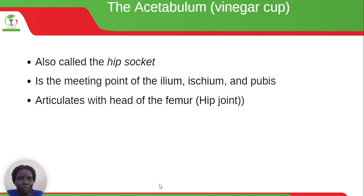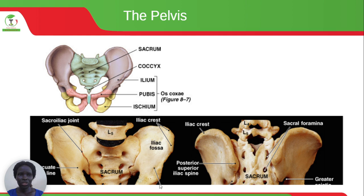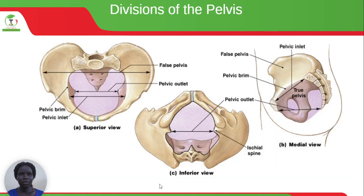The acetabulum, also called the hip socket or vinegar cup, is the meeting point of the ilium, ischium and the pubis. The pelvis articulates with the head of the femur at the hip joint. The pelvis is divided into two: the false pelvis, which is the outer portion, and the true pelvis, which is the inner portion, divided by the pelvic rim.